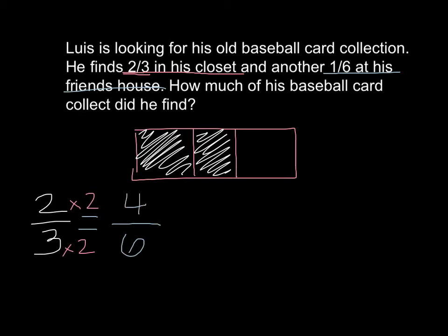To confirm this in my diagram, instead of being chopped up into three pieces, I need to now chop my piece into six different pieces. I still see that I have one, two, three, four-sixths as it states right here, so I know that is still equivalent to two-thirds. But now this allows me to add my one-sixth, so I can take one of these six sections and fill in that additional one.